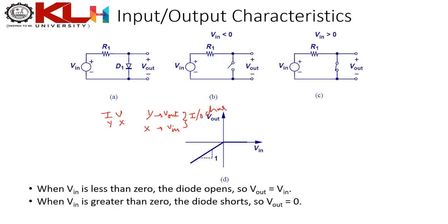Analyzing the circuit for IO characteristics: when V_in > 0, the anode is at higher potential, the diode is forward biased, and we replace it with a short circuit. V_out is shorted to ground, so V_out = 0.